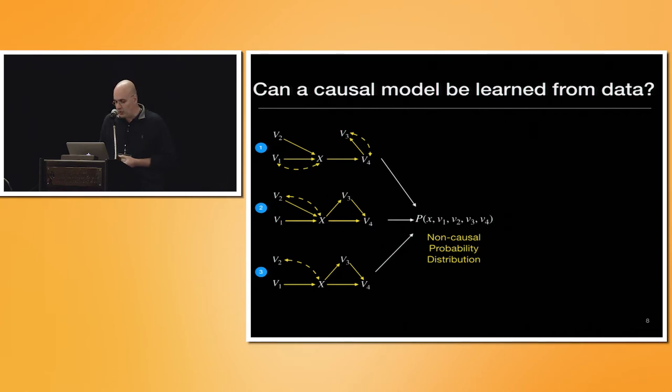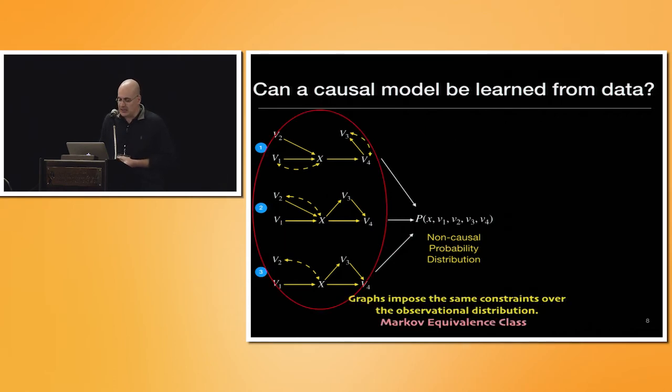And the reason is, suppose that you have these different graphs. The difference are sometimes arrows, but usually they're bidirected, at least in this case, they're bidirected arrows. They have graph G1, G2, G3, and could be many. Those are just some of them. And it turns out that each of these graphs could be generating the same observation, non-causal, or observational distribution over these five variables, x, V1, V2, and V3, and V4.